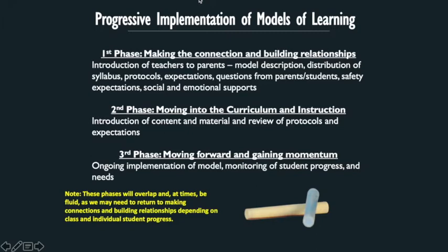After we have that established, then we can move on to the second phase, where we're moving into curriculum and instruction. This is when we can share content expectations, content activities, learning activities, projects, and hopefully provide that rich learning experience we used to have in the classroom. In the third phase, with polish and collaboration and practice, we're looking forward and gaining momentum. Understand that these three phases are cyclical — it doesn't have to follow one after the other. In an event of a crisis, we may have to go back to phase one to make sure that those social and emotional supports are provided when needed.